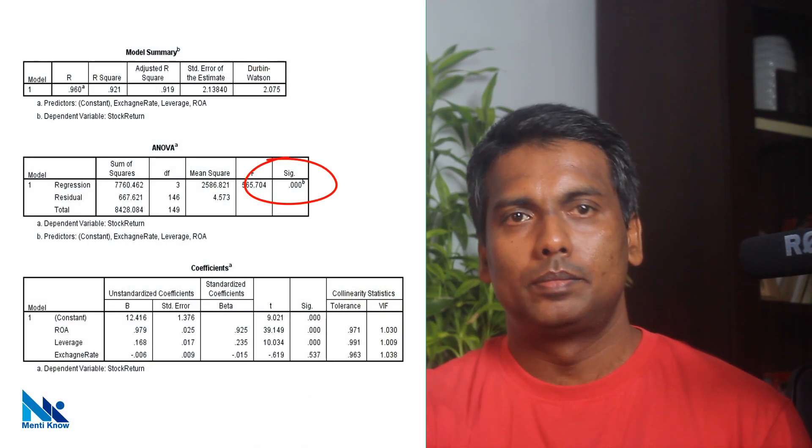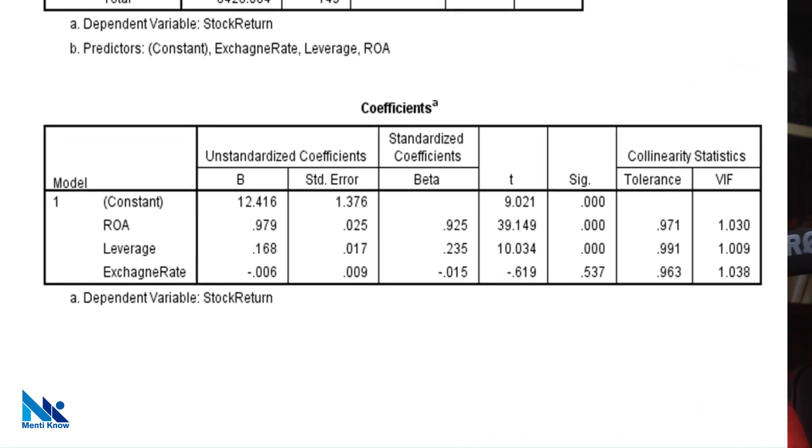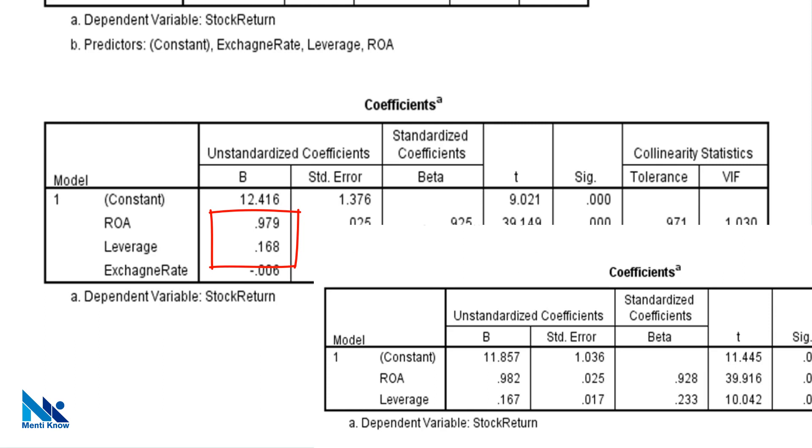Everything still looks good. All VIF values are below 5. And see here, even when I change the model by adding another variable, the coefficient for ROA and leverage has not been changed. This indicates that these estimates are reliable.